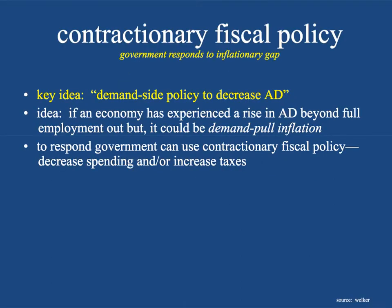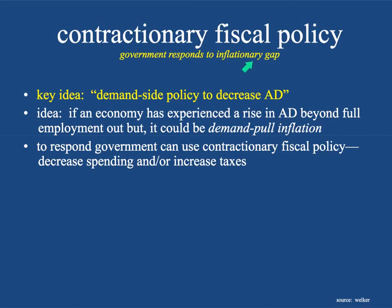The basic idea here is pretty straightforward. This is the government responding to an inflationary gap, which means that inflation is getting big — there's a lot of inflation — and basically the government wants to slow the economy down.